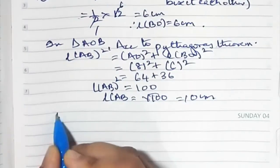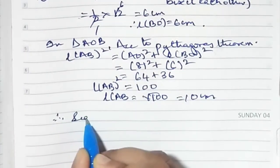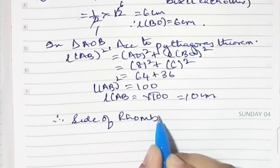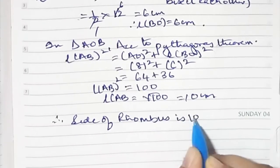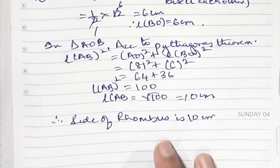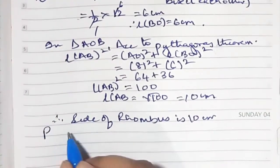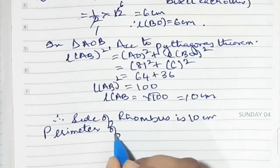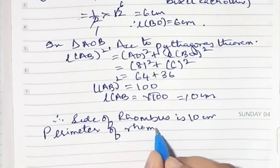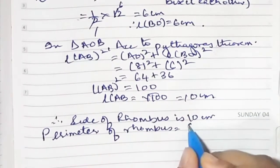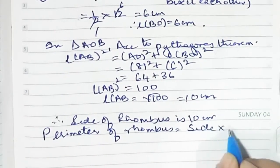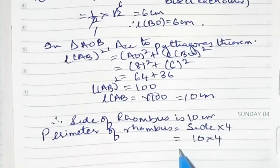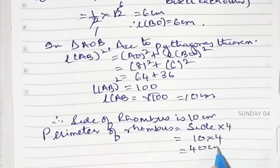Length of AB is equal to √100, that is 10 centimeters. AB is 10 centimeters, so the side of the rhombus is 10 centimeters. Now the perimeter will be 10 × 4 — because all sides are equal — which is 40 centimeters. So the side is 10 cm and the perimeter is 40 centimeters.